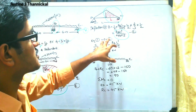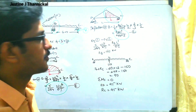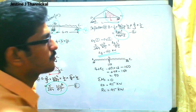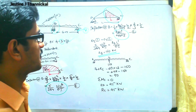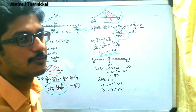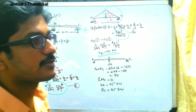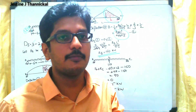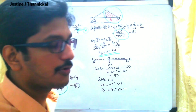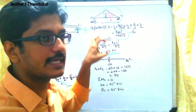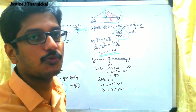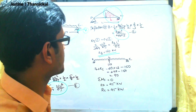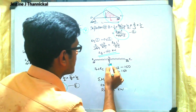Equating equation 1 (UDL deflection) and equation 2 (point load deflection), we finally get Rb = 150 kN. This is straightforward using the moment area method, and works easily because the load acts at the center point.